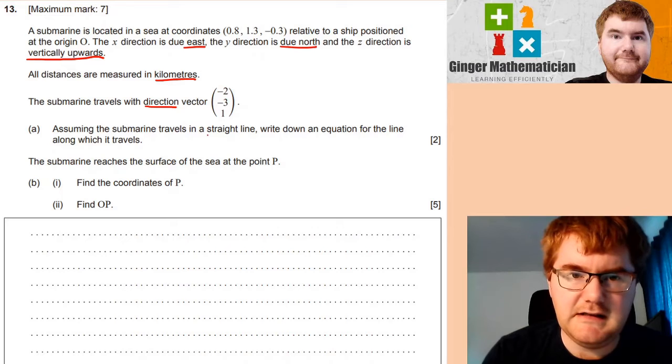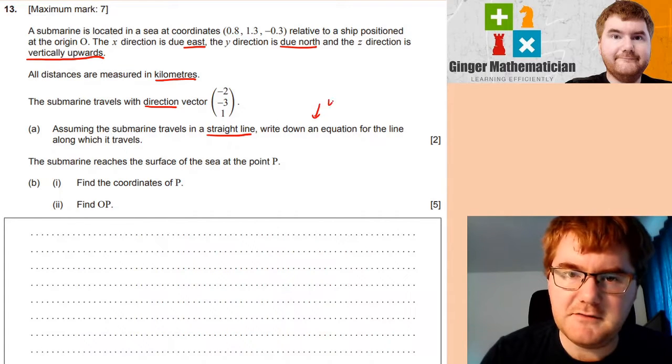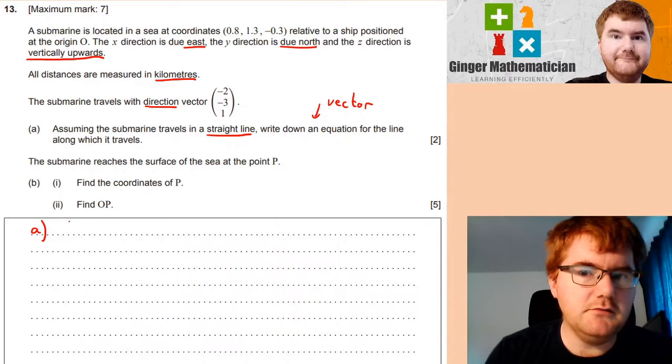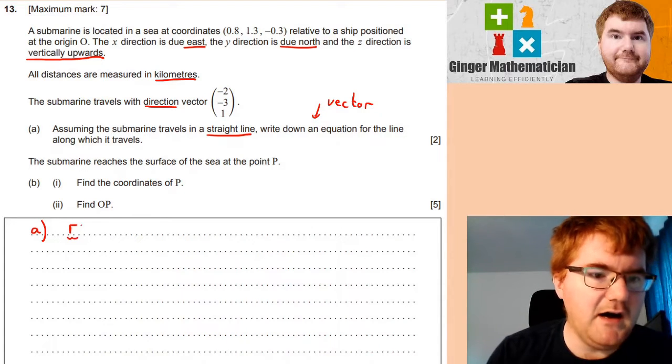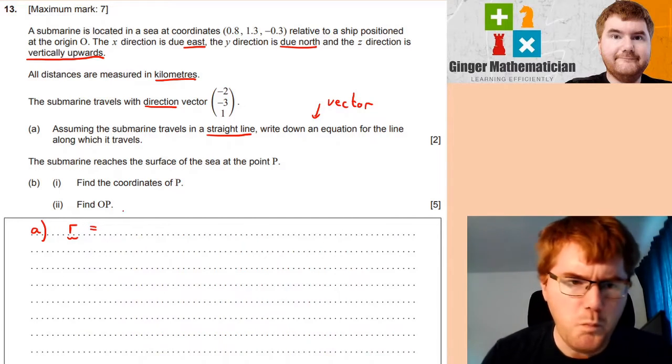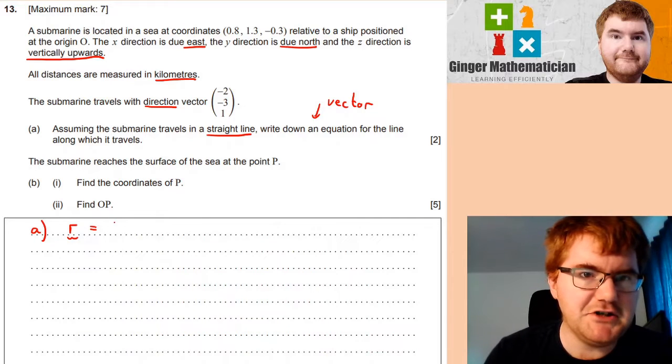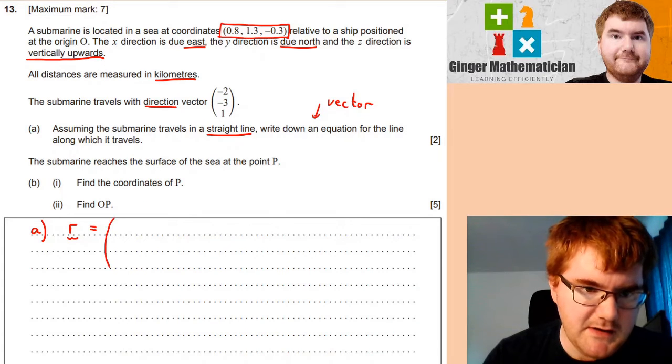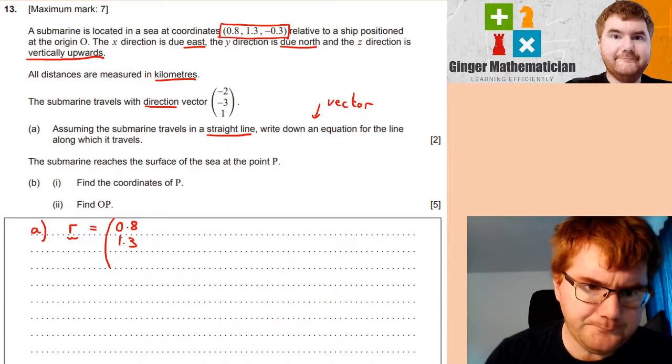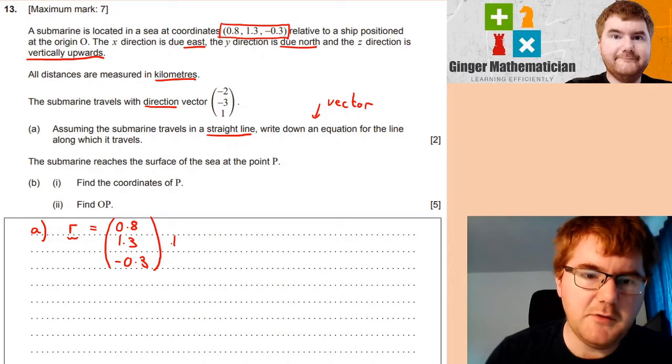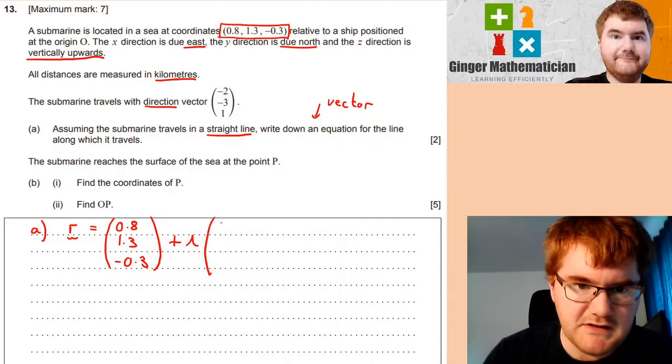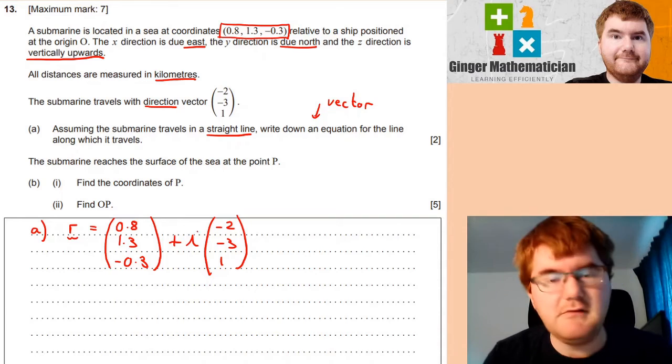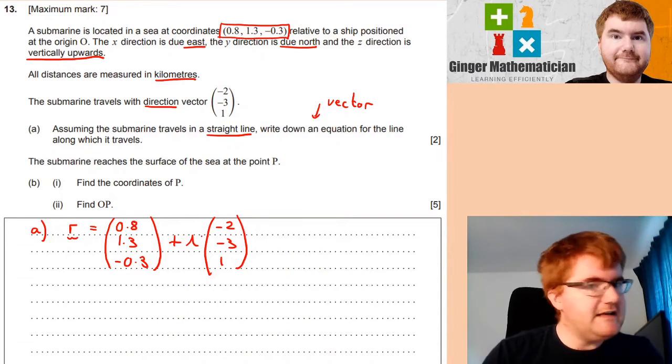Assuming it travels in a straight line, write down an equation for the line along which it travels. Now, remember notation is important. You'll lose a mark if you do not write this in terms of R with the vector notation. In order to build up our vector equation, we need a position vector. We're going to convert this into a vector, so we get (0.8, 1.3, -0.3). Then we have lambda times the direction vector, which is (-2, -3, 1). This gives us the two marks.